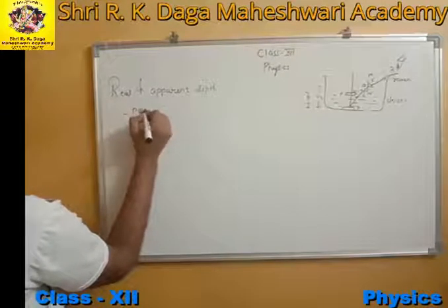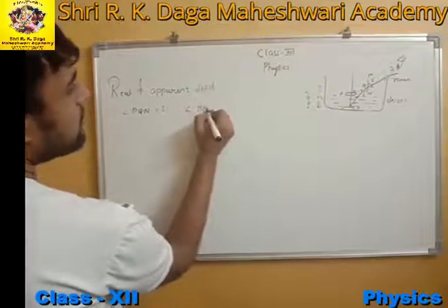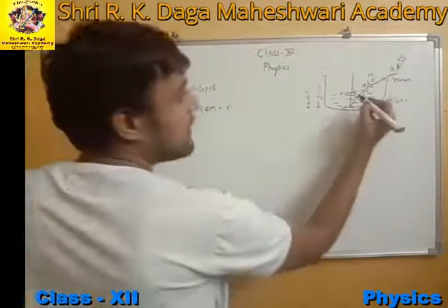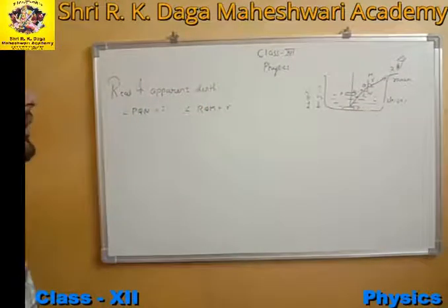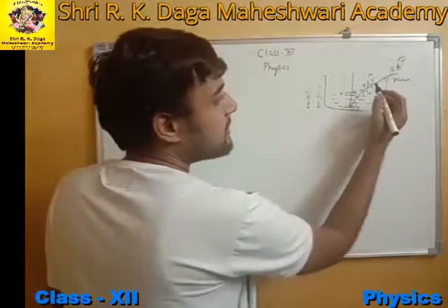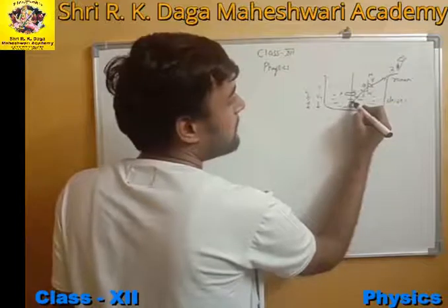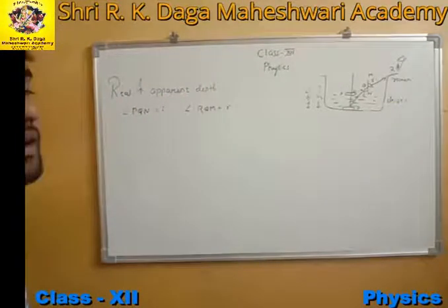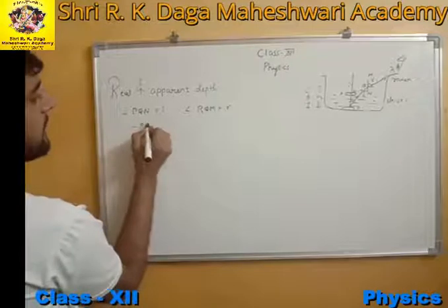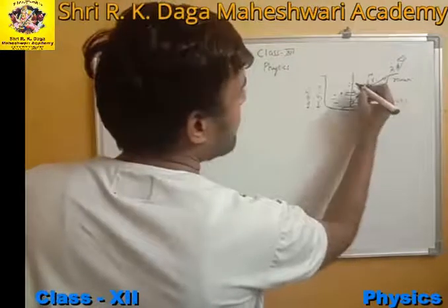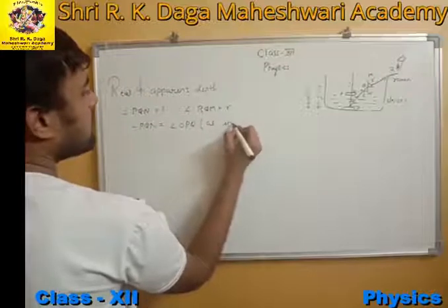Angle PQN is equal to the angle of incidence, and angle RQM will be the angle of refraction. Angle PQN is equal to angle OPQ, as they are both alternate interior angles.